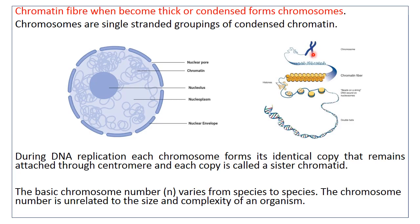These two chromosomes shown here are the same copy of the same chromosome. The basic chromosome number N varies from species to species, but for a given species this basic chromosome number N is unrelated to the size and complexity of the organism.